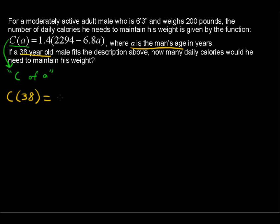So this equals 1.4 times the quantity 2,294 minus 6.8 times this 38, replacing 38 for A. And now we start to simplify.